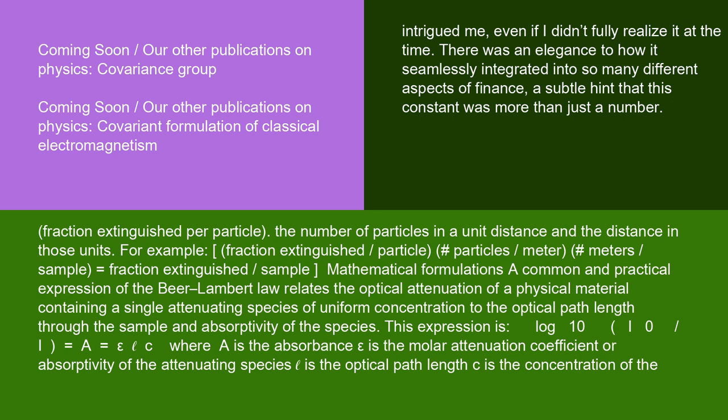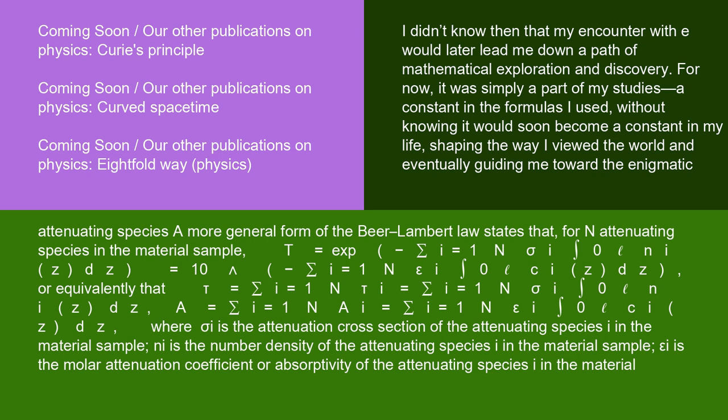Mathematical formulations: a common and practical expression of the Beer-Lambert Law relates the optical attenuation of a physical material containing a single attenuating species of uniform concentration to the optical path length through the sample and absorptivity of the species. This expression is: log₁₀(I₀/I) = A = εcℓ, where A is the absorbance, ε is the molar attenuation coefficient or absorptivity, ℓ is the optical path length, and c is the concentration of the attenuating species.